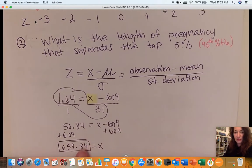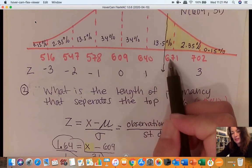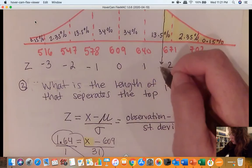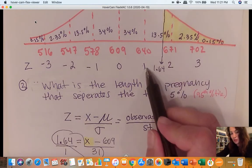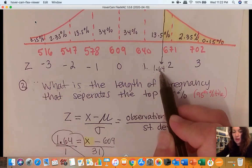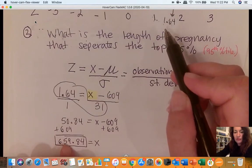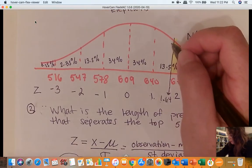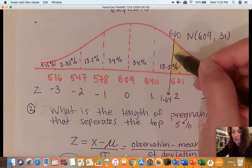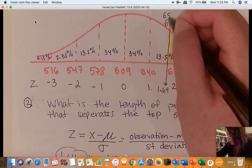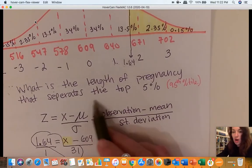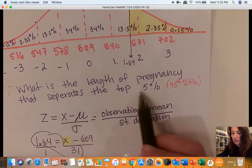So that is our x. Let's see if that makes sense. Does 659.84 fall between 640 and 671? Because we said our z-score was 1.64, and 1.64 also falls between z-score of 1 and 2. The z-score of 1.64 corresponds to 659.84 days. We could say about 660 days or be more accurate and say 659.8. So to answer the question, the length of pregnancy that separates the top 5% is 659.8 days.